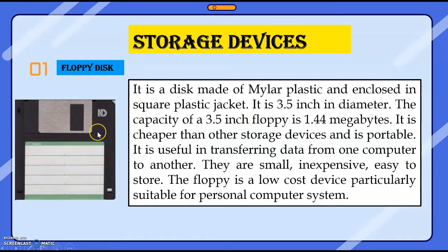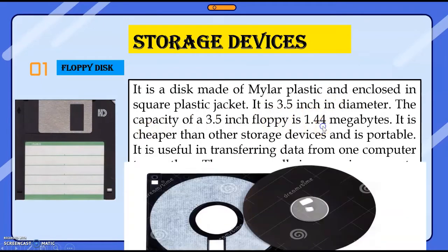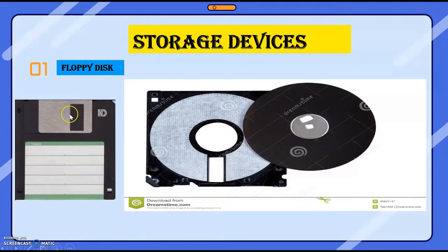Floppy disks are small, inexpensive, and easy to store. It is a low cost device particularly suitable for personal computer systems. The mylar plastic disk is covered with a square plastic jacket, but its storage capacity is very low — that is 1.44 MB. Inside this plastic jacket you can see the mylar plastic disk-shaped inside this floppy disk.